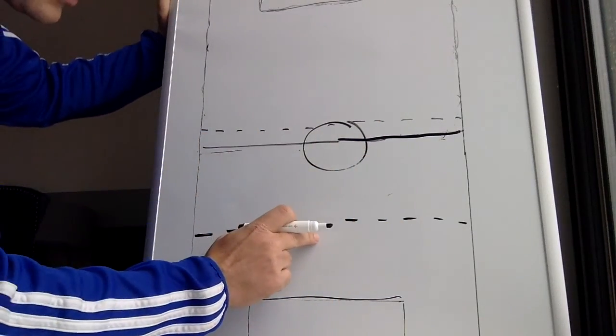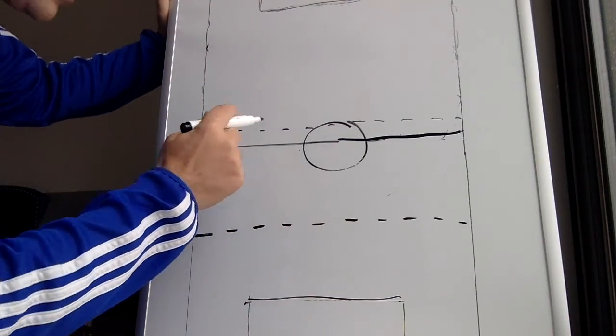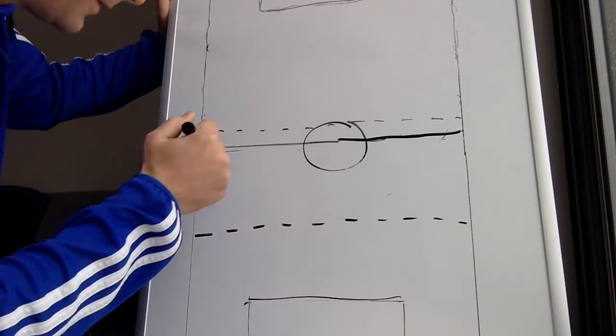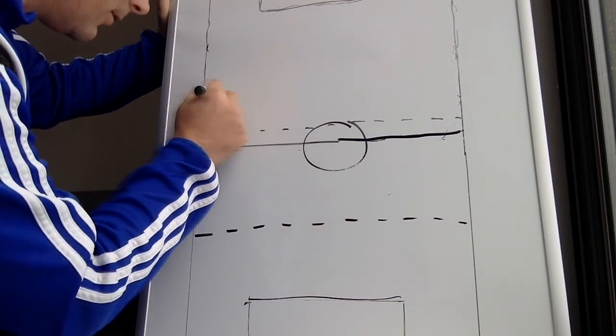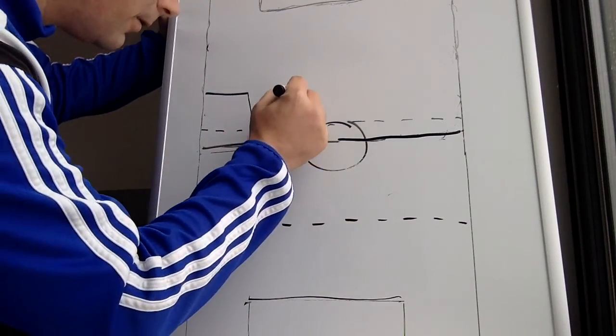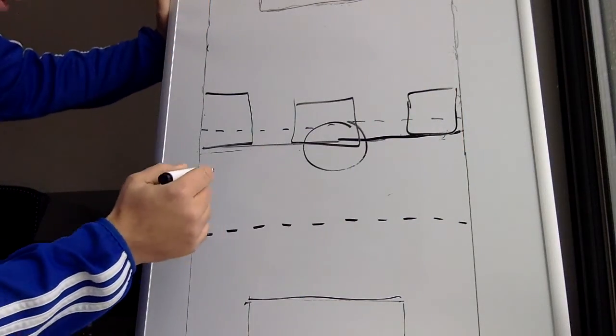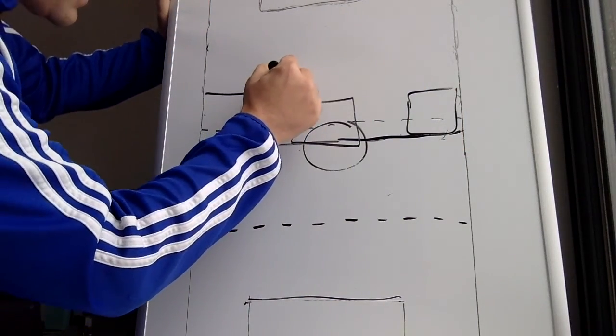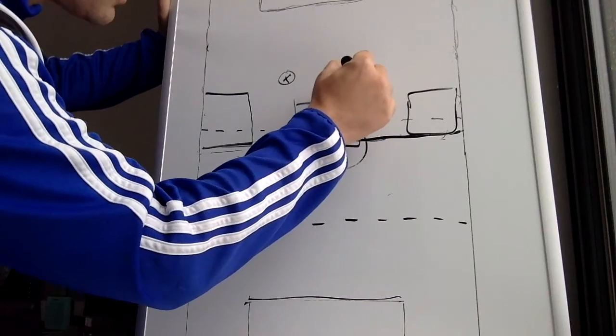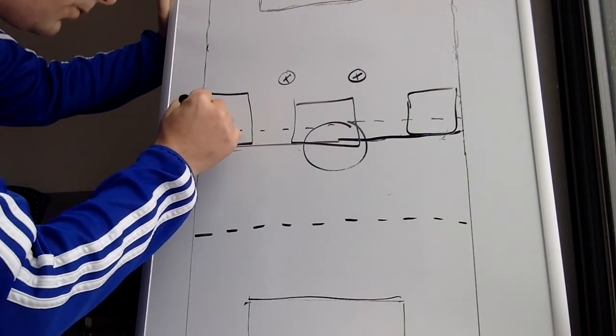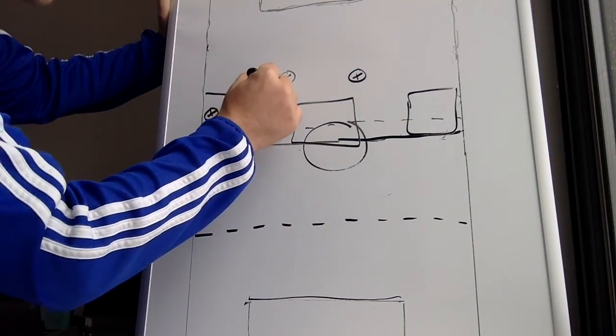Now, line of confrontation, line of restraint. I also like to have pressing zones. So our pressing zones are maybe a zone right here, maybe a zone here, and maybe a zone out wide. And what we know is when their center back has the ball, there's their other center back, and they're going to play the ball into their wing back. So the center back has the ball.